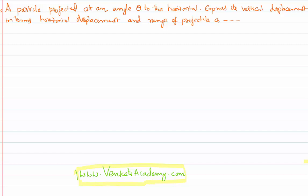In this video lesson we are going to solve a problem in two-dimensional motion. The problem is like this: A body is projected at an angle θ to the horizontal. We need to express its vertical displacement in terms of its horizontal displacement and the range of a projectile.